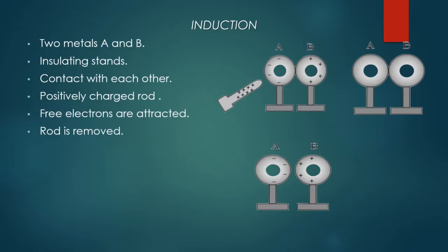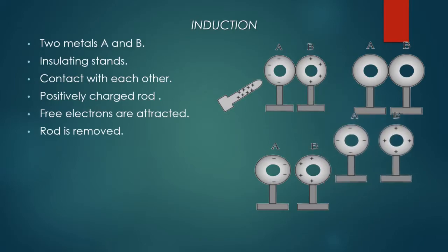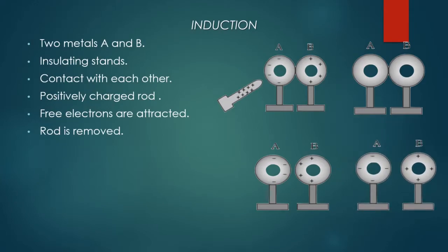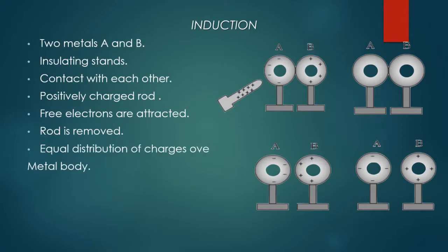If the charged rod is removed and the spheres are kept with a small distance of separation, the charges on the spheres rearrange themselves due to the force of attraction. If the two spheres are placed wide apart, charges are then uniformly distributed into the whole metal body — there is no one place with more charge and one place with less. This is the whole process of induction — this is how you can charge a body by induction.